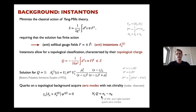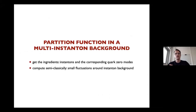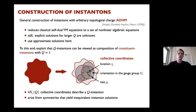As a corollary of the index theorem: self-dual gauge fields yield only left-handed zero modes, while anti-self-dual fields with negative topological charge yield only right-handed zero modes. I now compute the partition function in a multi-instanton background, first obtaining the ingredients — the instantons and quark zero modes — then performing a semi-classical computation with small fluctuations around the multi-instanton background.